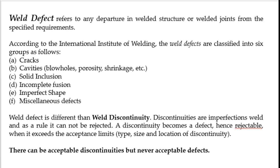As per the IIW, International Institute of Welding, weld defects are classified into six groups: cracks, cavities, solid inclusion, incomplete fusion, imperfect shape, and miscellaneous defect.